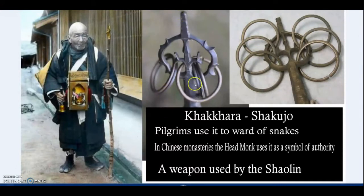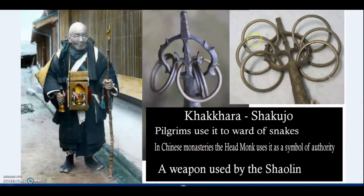What I haven't mentioned: the Kakaro or Shakujo, used by pilgrims. So the Buddhist tradition of priests and monks carrying this wand — and the not-so-subtle connections. Even in the Chinese monastery, the head monk uses this as a symbol of his authority, just like kings and queens carry the scepter and orb to show their authority to define weights and measures. We see very much the same thing happening here. And this also later became a weapon used by the Shaolin.